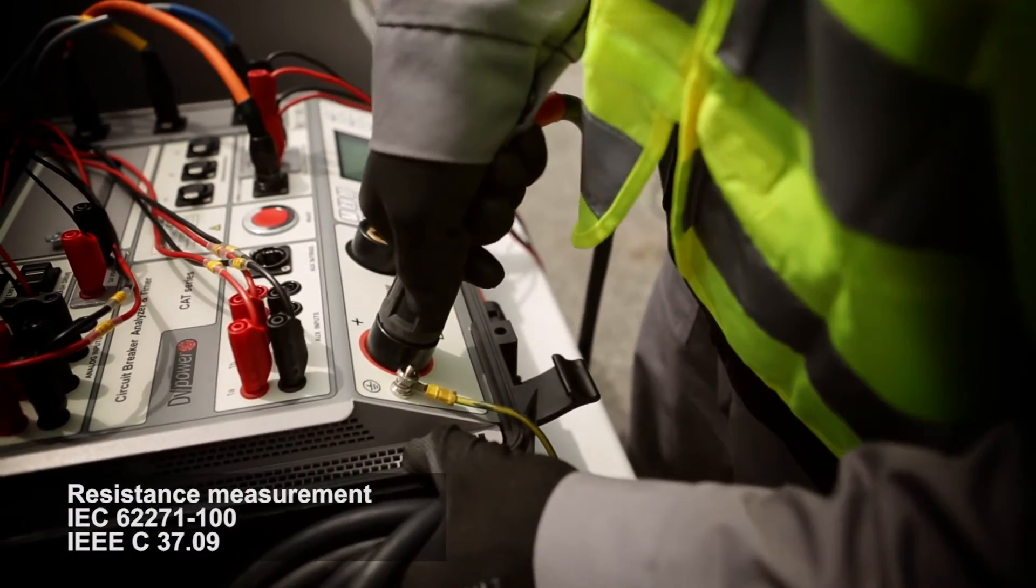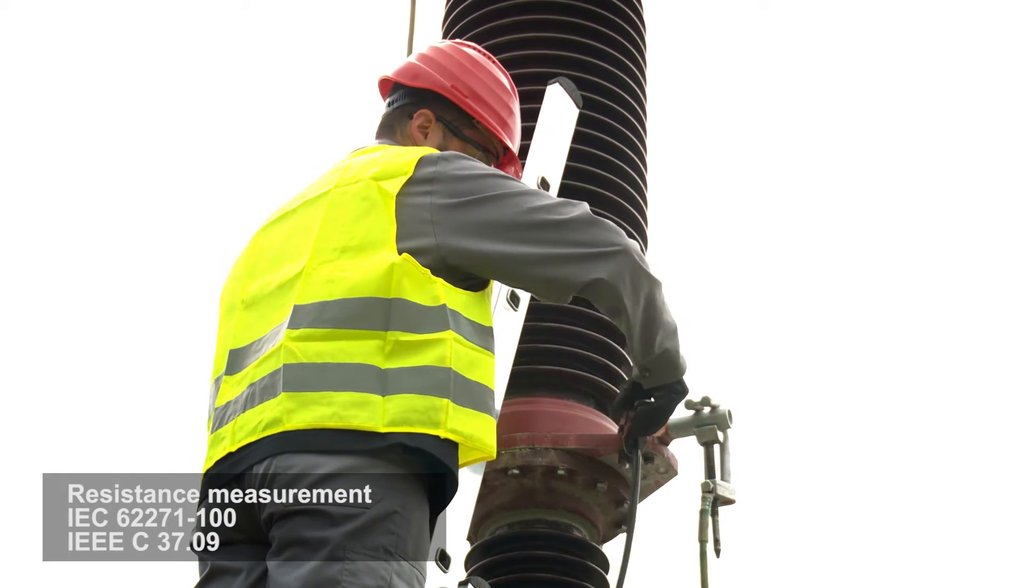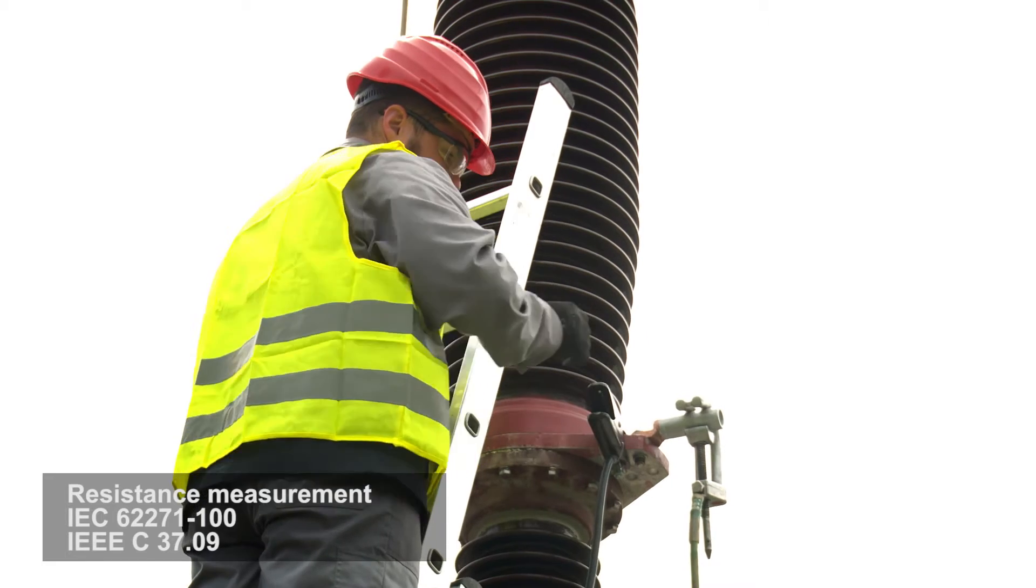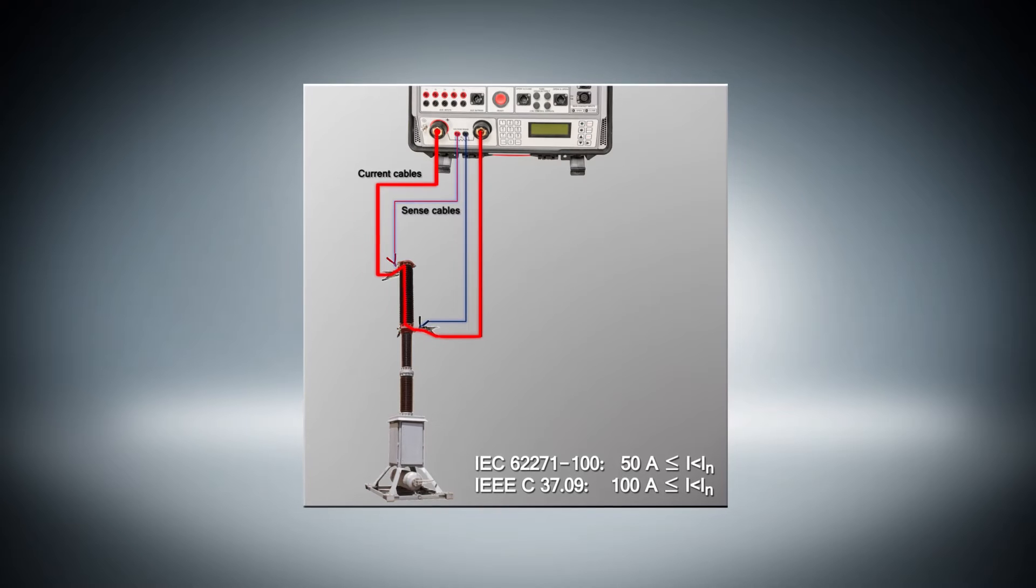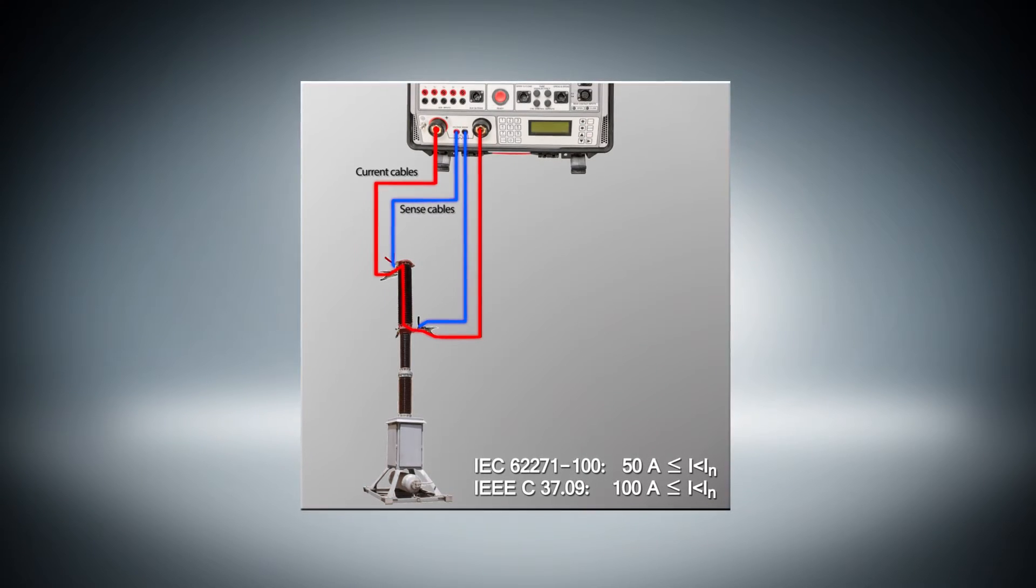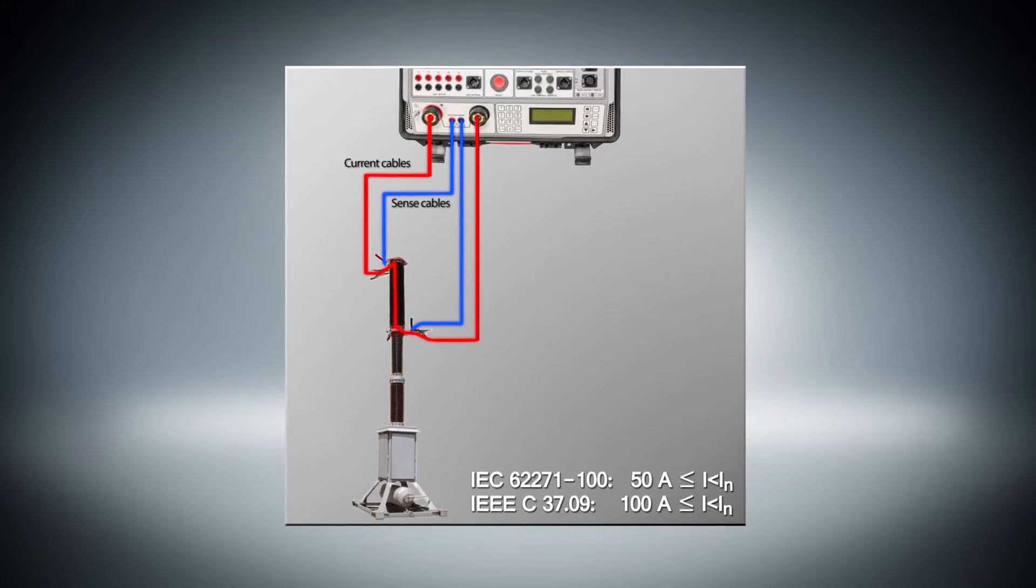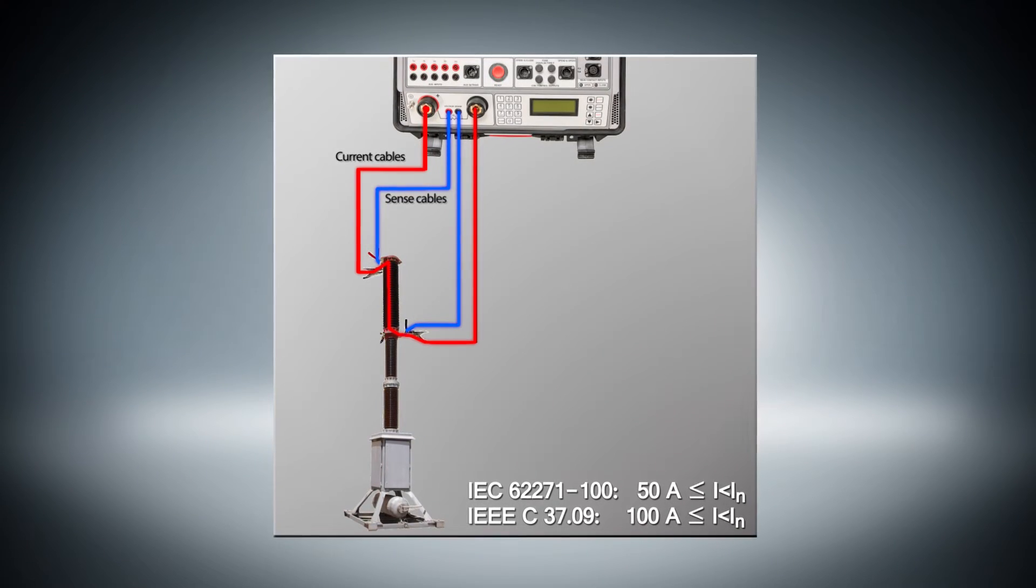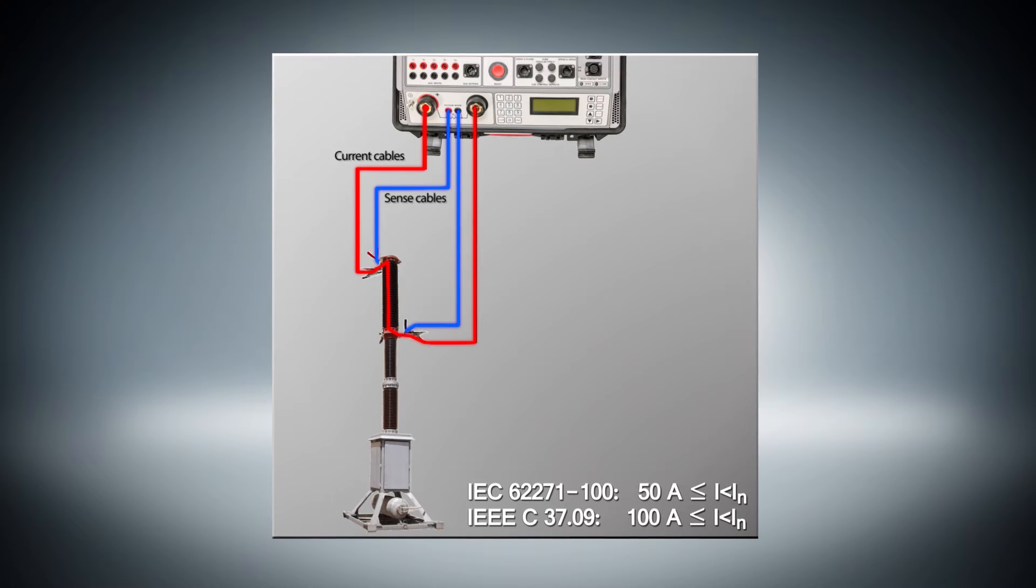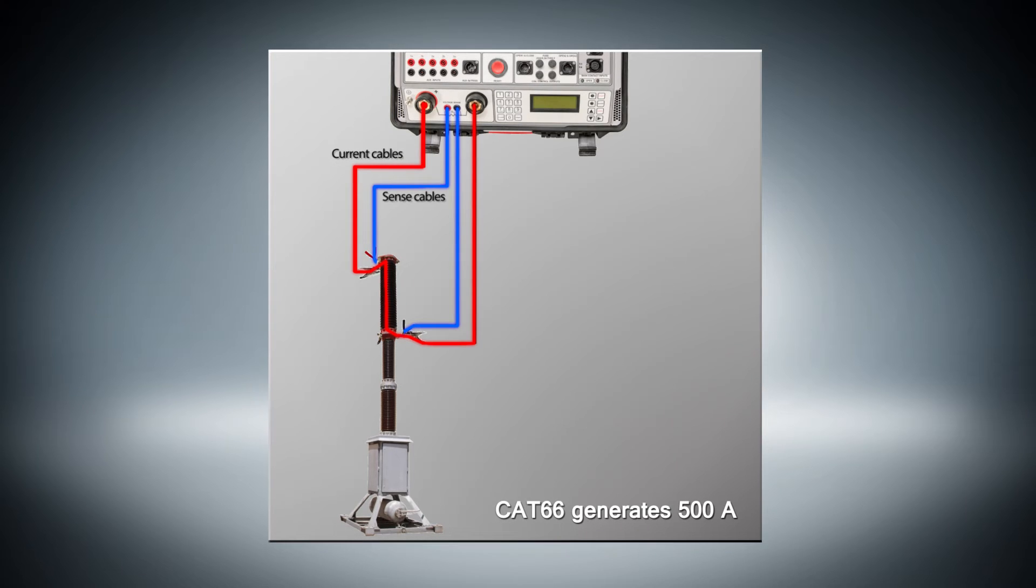Well known Kelvin's 4-point method is used for resistance measurement. DC current is generated through the closed circuit breaker contacts. The voltage drop is measured between the terminals of the circuit breaker. The resistance is calculated using Ohm's law. According to the IEEE standard, the minimum test current is from 100A DC up to as close as possible to a breaker's nominal current. The IEC standard defines the test current in the range from 50A DC to the rated circuit breaker continuous current. CAT66 can generate 500A during a contact resistance measurement test.